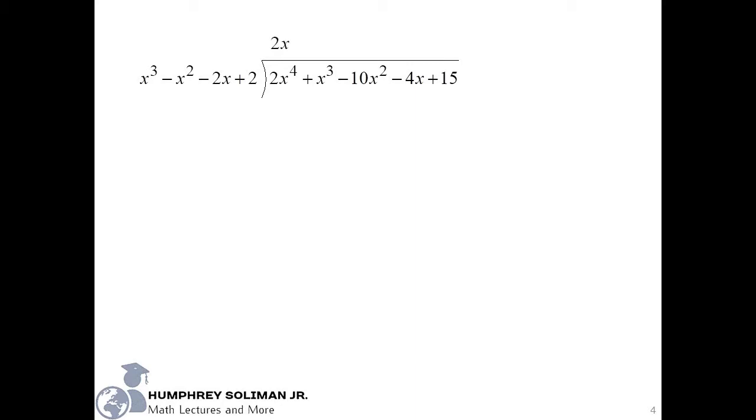And then, we will multiply all the terms outside by 2x to get 2x raised to 4, minus 2x cubed, minus 4x squared, plus 4x.